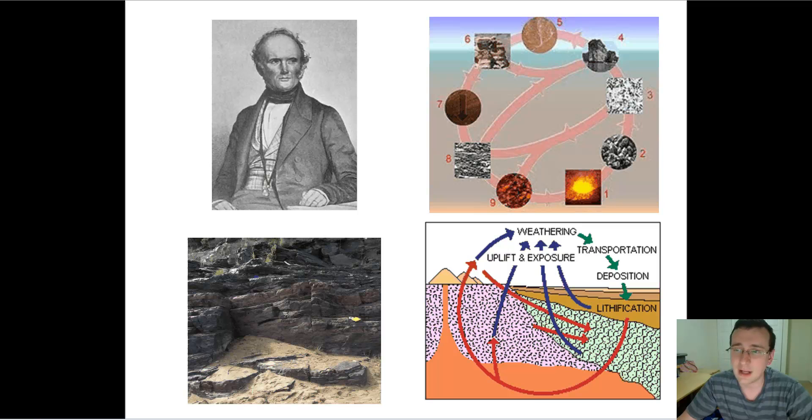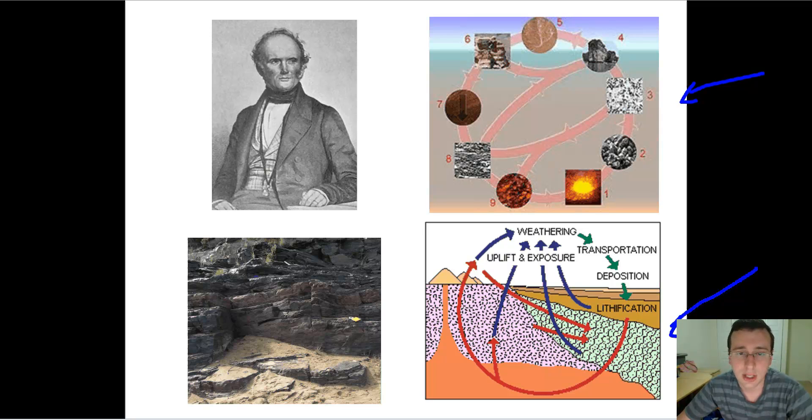Scientists realize that earth must be very incredibly old because it takes thousands of years for rocks to form. He figured this out by looking at the rock strata and starting to figure out things like the rock cycle and changes like erosion, deposition, lithification, uplift, exposure, weathering.